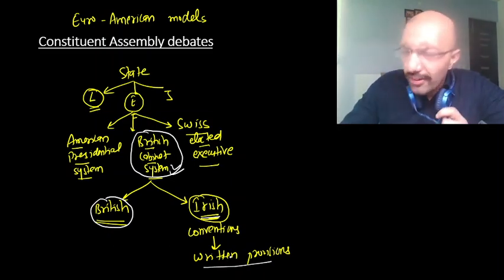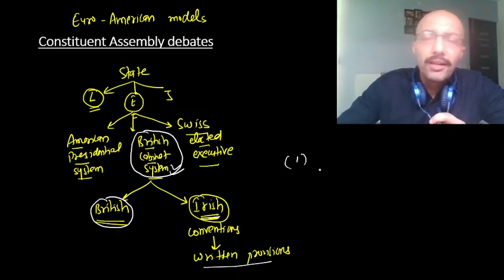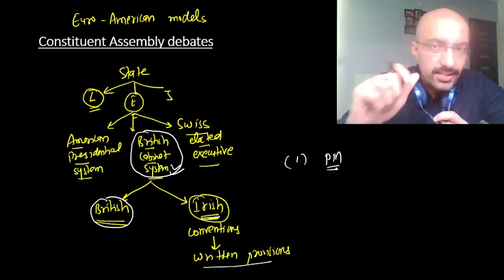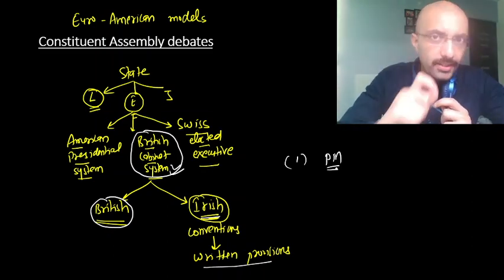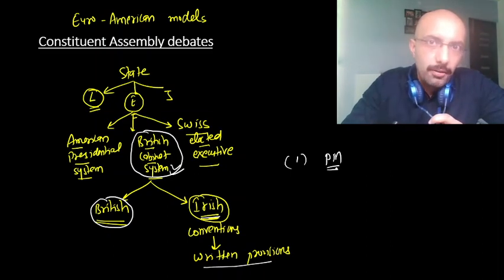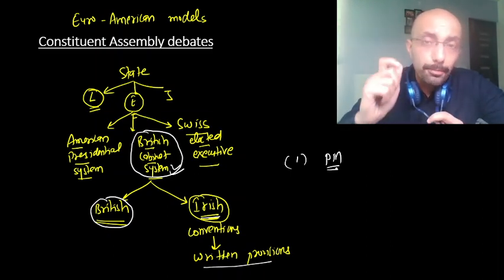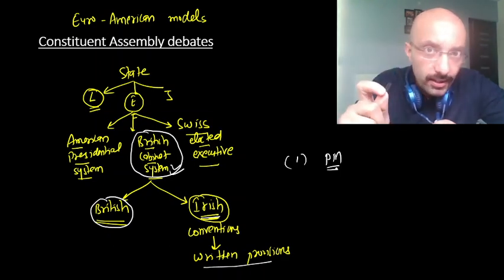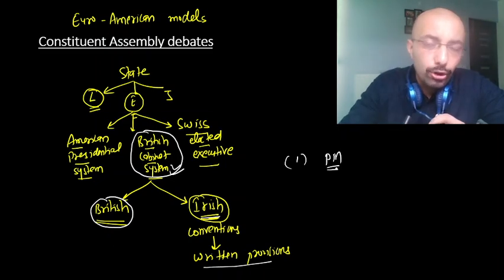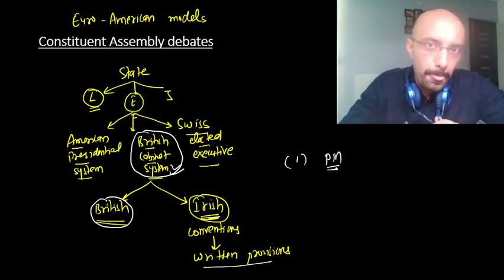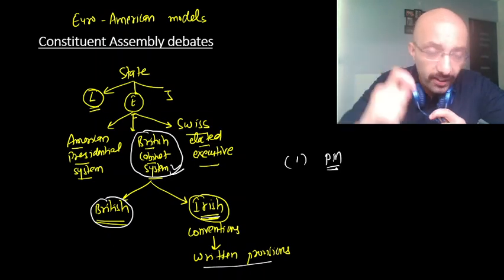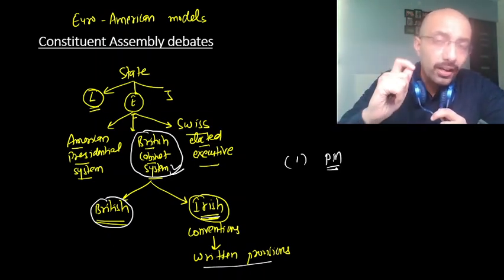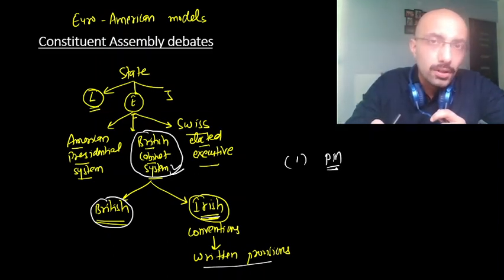There are many such conventions. For example, the first such convention in Britain which is not written is the appointment of the Prime Minister. We understand that the head of state appoints the Prime Minister, but that PM should be someone who enjoys majority support in the lower house — the House of Commons in the UK or Lok Sabha in India. This principle is left only on conventions in Britain. Should India convert it into writing — that the President shall appoint only the person who has majority in the lower house?